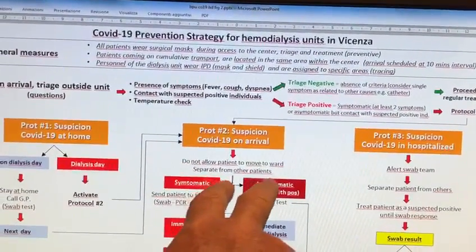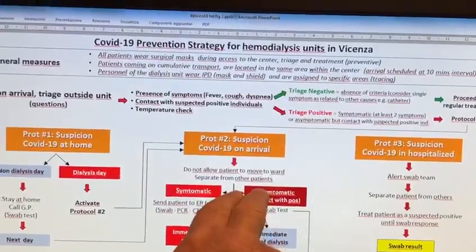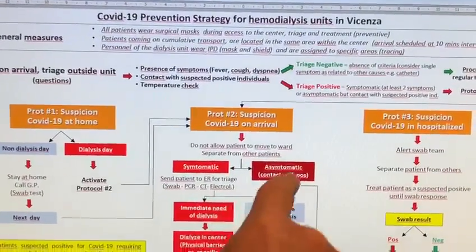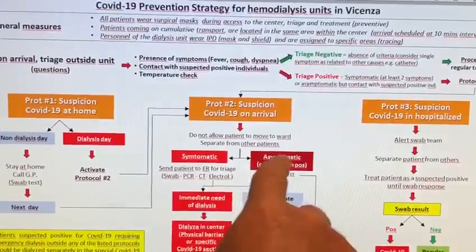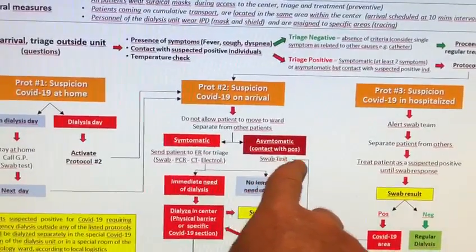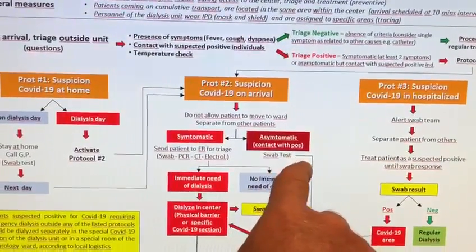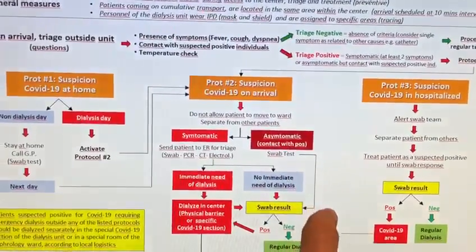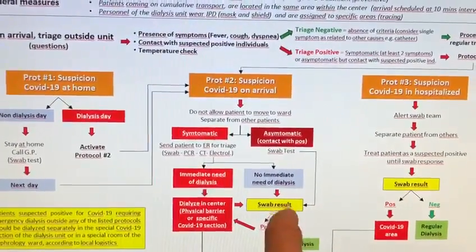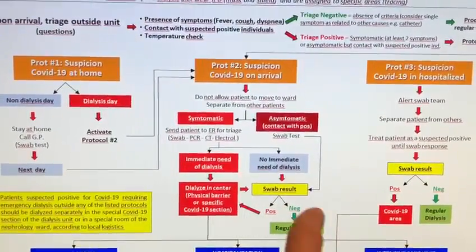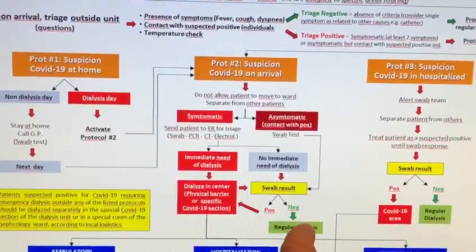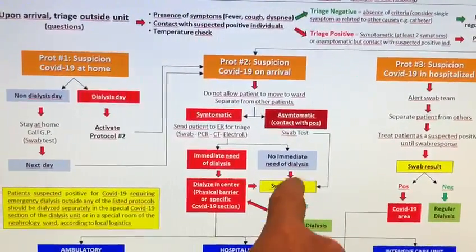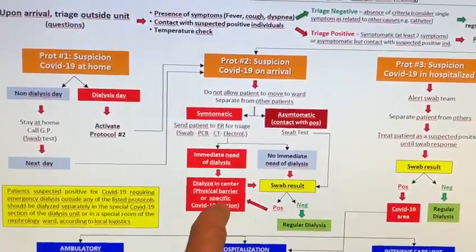We do not allow patients to move to the ward; we separate them from other patients. If the patient is asymptomatic but had contact with a positive individual, they get a swab test, and based on the result may go to regular dialysis if negative, or follow a specific dialysis pattern if positive.